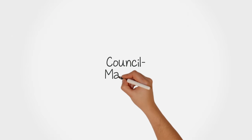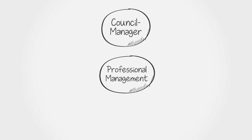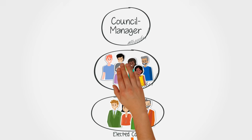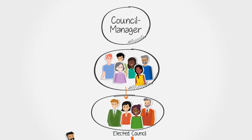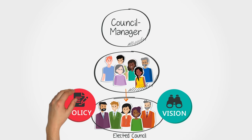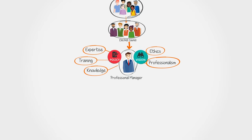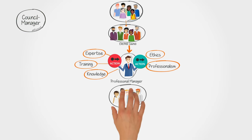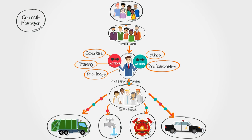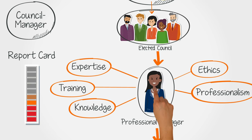The council-manager form of government was created to combat corruption and provide for the professional management of local governments. In the council-manager form, the people elect a council, including a mayor, and they collectively create a vision for the community and set policy. The council then hires a non-political professional manager, based on experience and credentials, who implements the council's policy and delivers services equitably. The manager remains accountable to the council because if at any time the council decides that person is ineffective, they can vote to replace the manager.